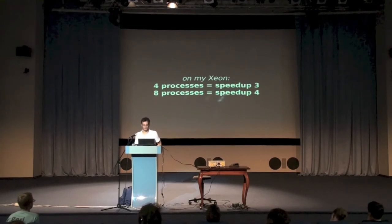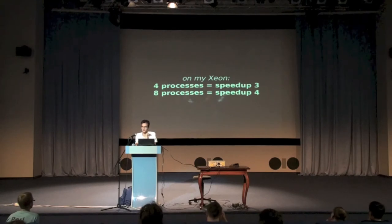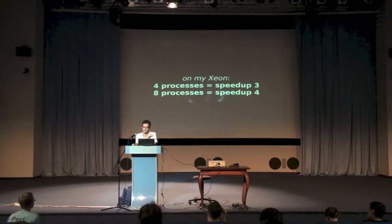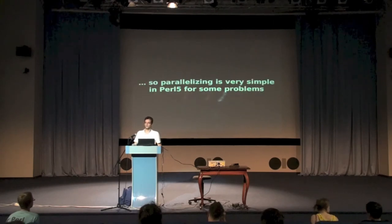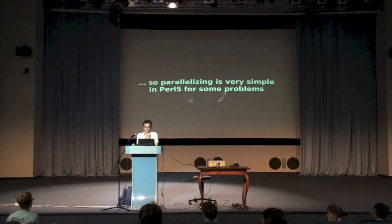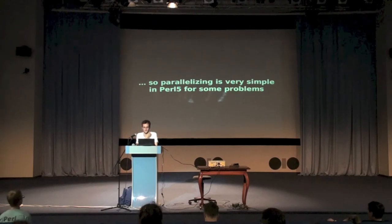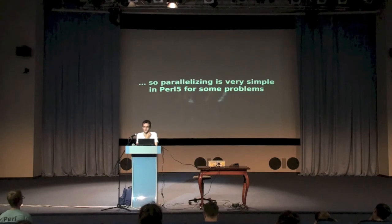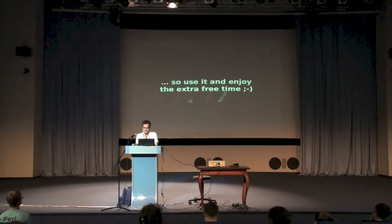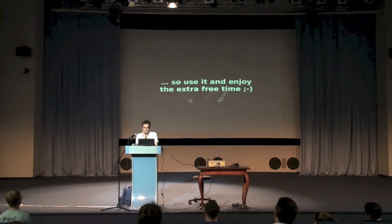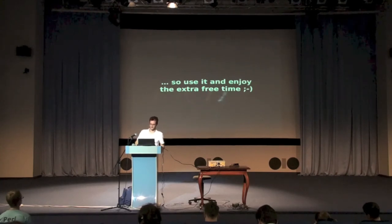Hyperthreading means you still have only four physical pipelines but two threads share one pipeline with interleaved instructions, which reduces gaps and achieves performance even better than the Pentium 3 architecture. On my office machine, if I use eight processes in parallel I get a speedup of four, at the cost of eight times the memory usage — so I'm limited to eight processes with eight gigabytes RAM each, which is still enough for many problems. If you have it, use it, but don't expect too much. Parallelizing in Perl 5 can be very simple if you don't want to care about process and thread management. Thanks for listening — start parallelizing if you haven't yet, and enjoy the extra free time it will leave you.